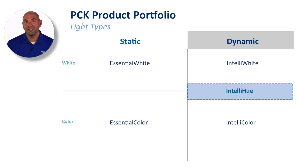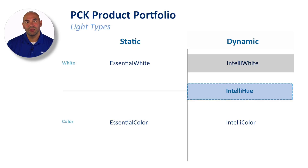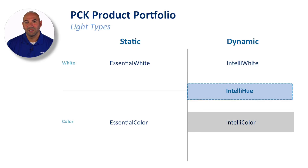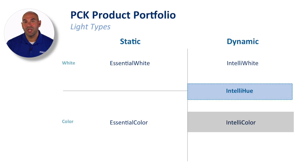A dynamic white light fixture is known as Intelli-White, or IW. Sometimes these fixtures are also referred to as tunable white. They are able to tune from warm to cool color temperatures. A dynamic color fixture is known as Intelli-Color, i-Color, or just Color. These fixtures are able to mix channels of red, green, blue, and sometimes amber or white to create a full color-changing effect.